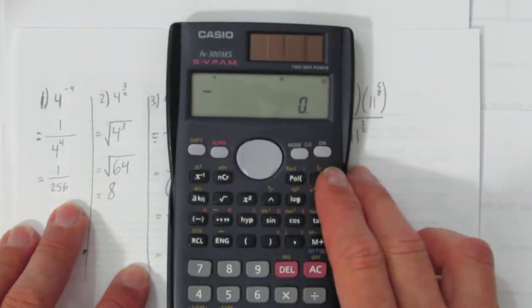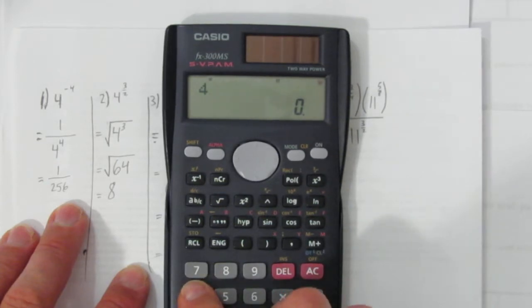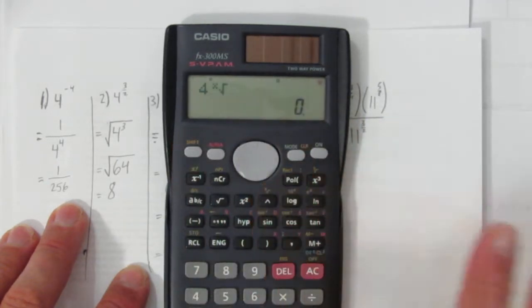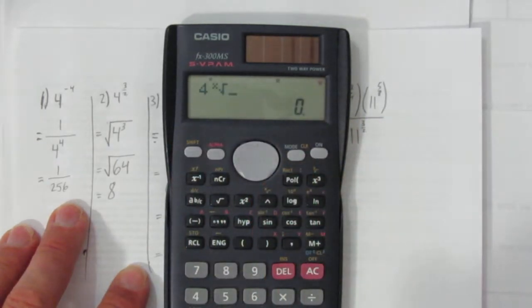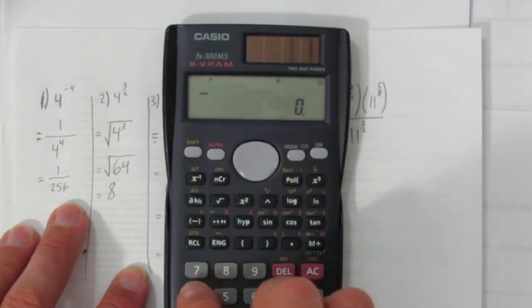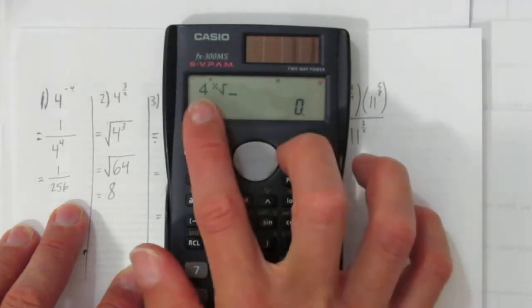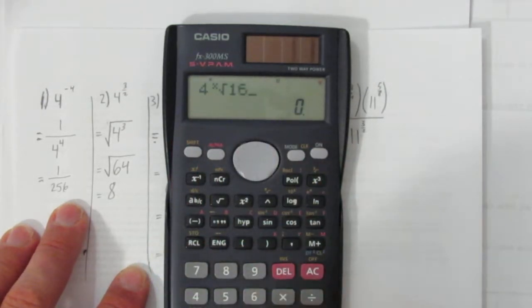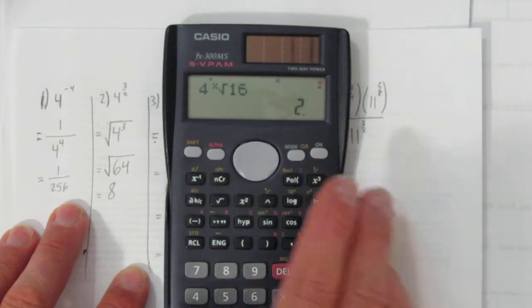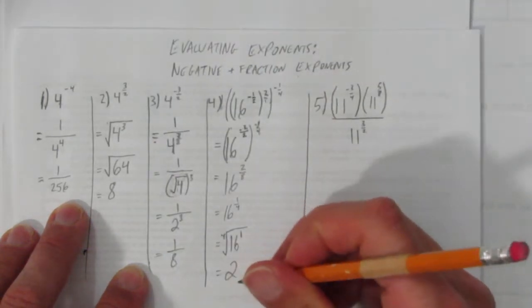Here's how on the calculator: press 4, shift the exponent button — some calculators work differently. On my calculator, 4 shift the exponent button gives the fourth root of 16, which equals 2. So the answer is 2.